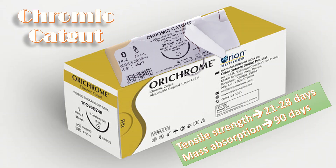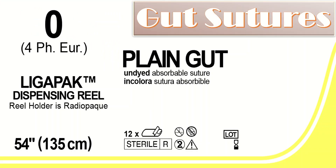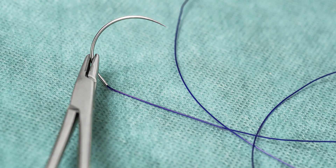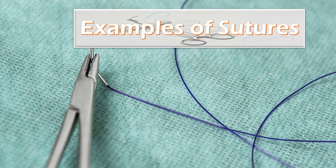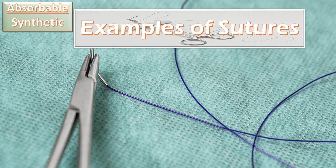The advantages of gut sutures are that they are absorbable monofilaments composed of 97 to 98 percent collagen, which results in minimal tissue reaction when implanted.